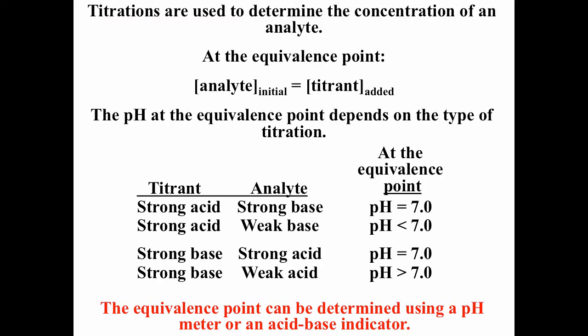Titrations are used to determine the concentration of an analyte. Basically, you add a titrant with a very known concentration until you completely react with the analyte. You determine how much titrant you added, from that you get the moles of the titrant, and moles of the titrant should equal the moles of the analyte if you have a one-to-one stoichiometry ratio for the reaction.